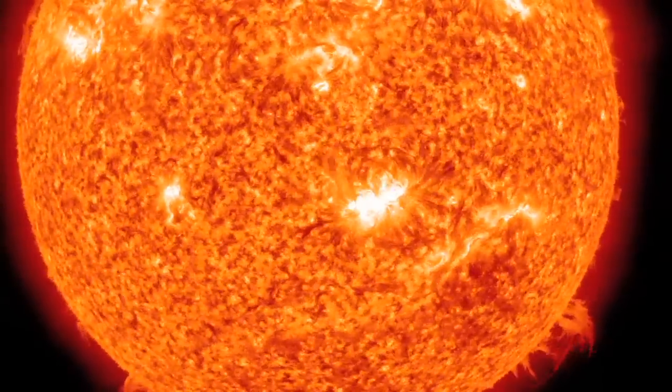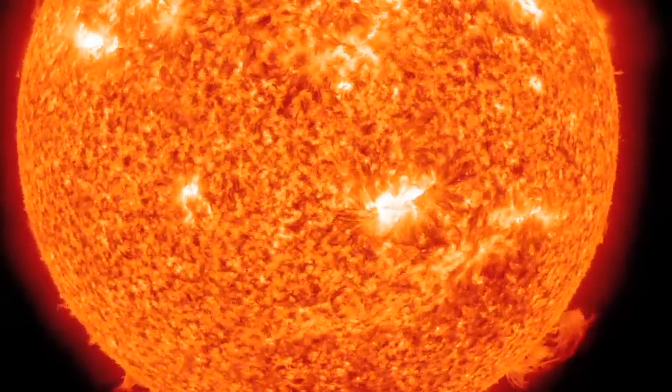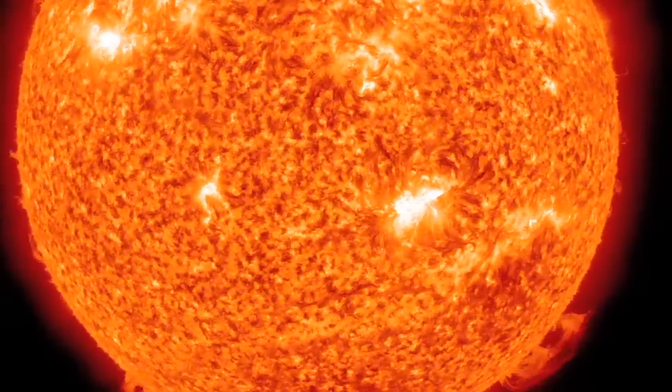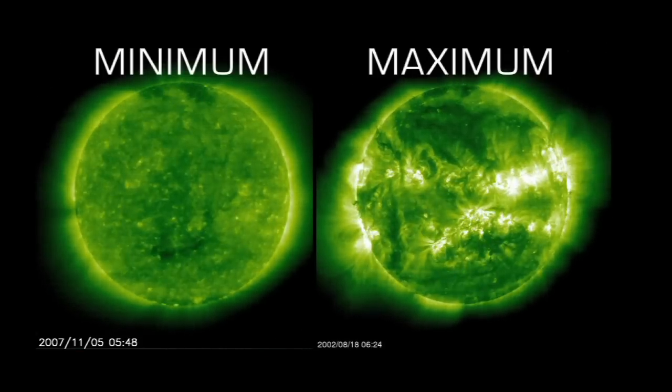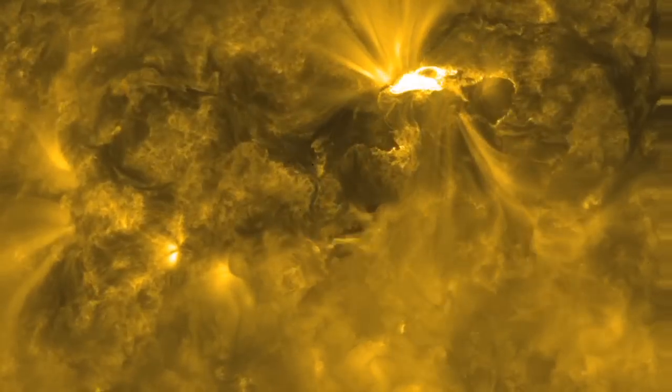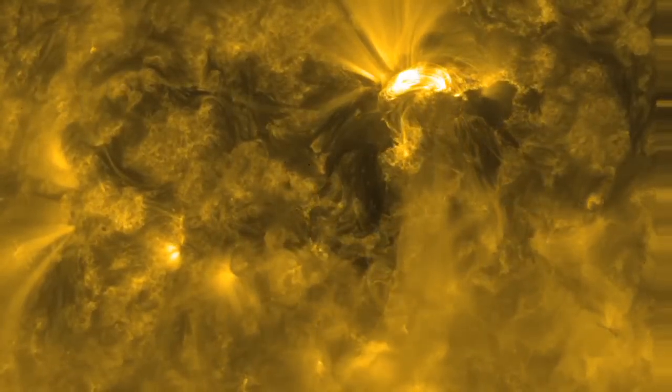Solar flares may seem like faraway events, but they can damage satellites and even ground-based technologies and power grids. Every 11 years, as the Sun reaches its maximum activity, they become bigger and more common, and that increases the chances that one will significantly affect Earth.